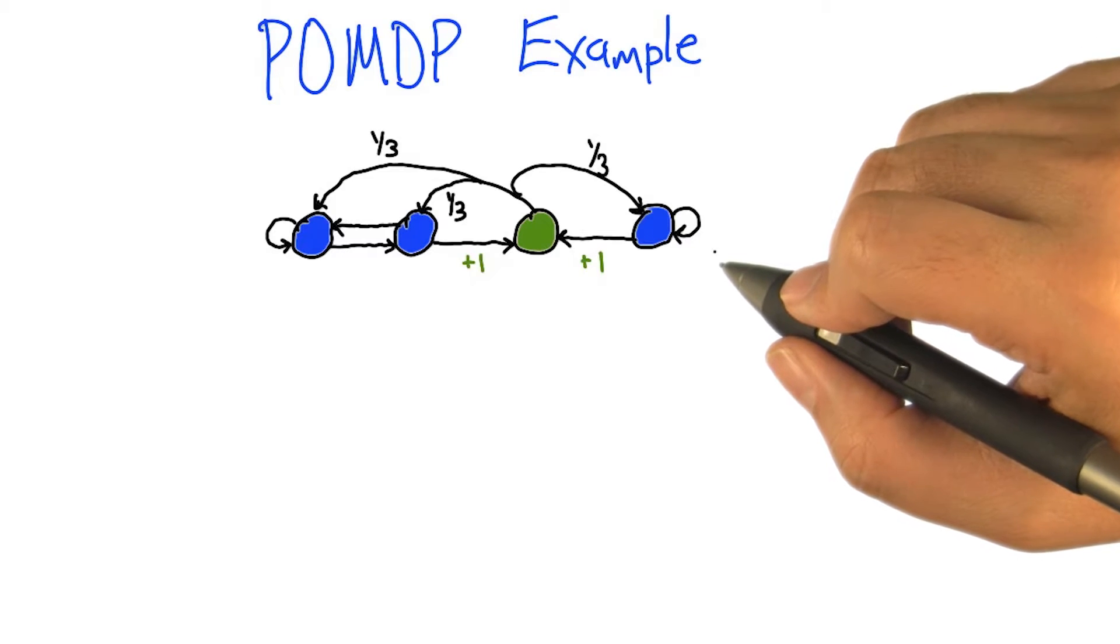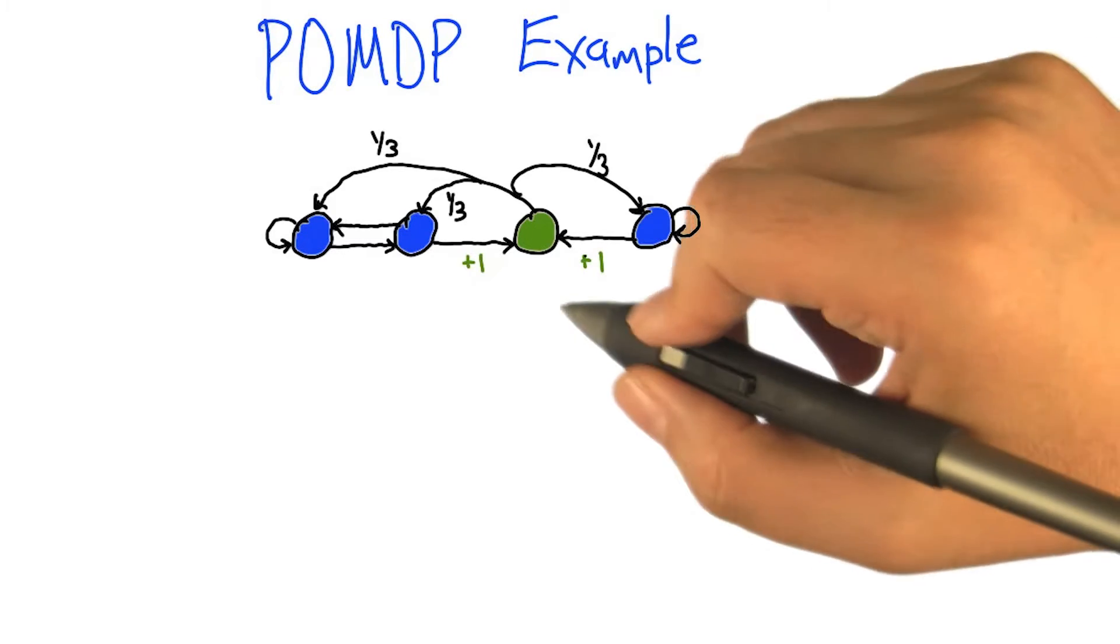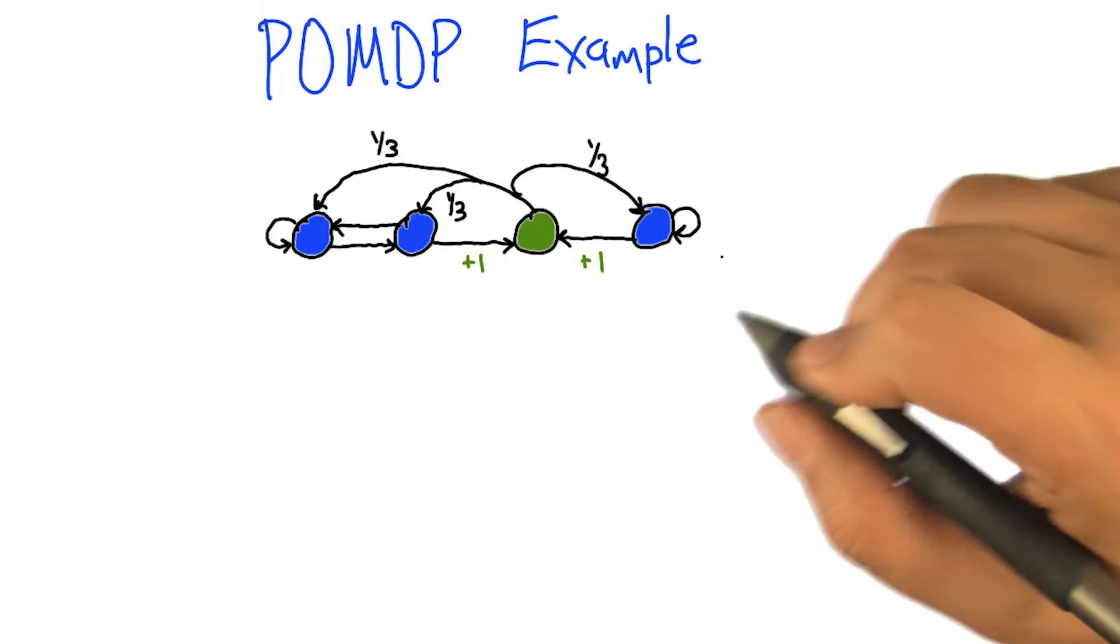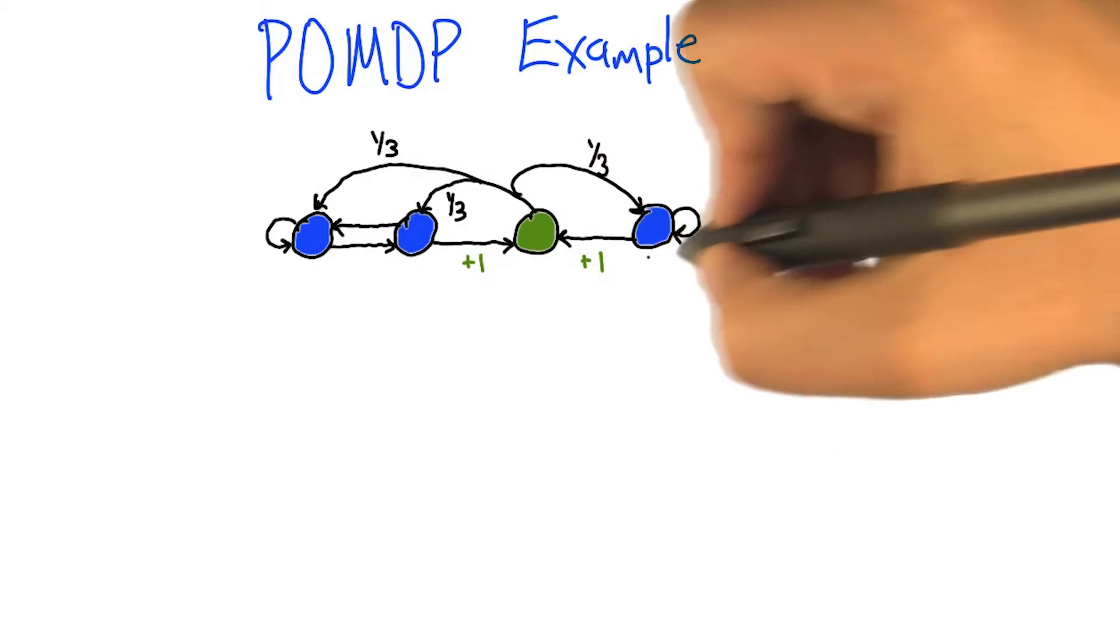So here's a little tiny POMDP that I've thought about in the past that I think makes for good illustration. We've got four underlying states, these four here, the four circles.